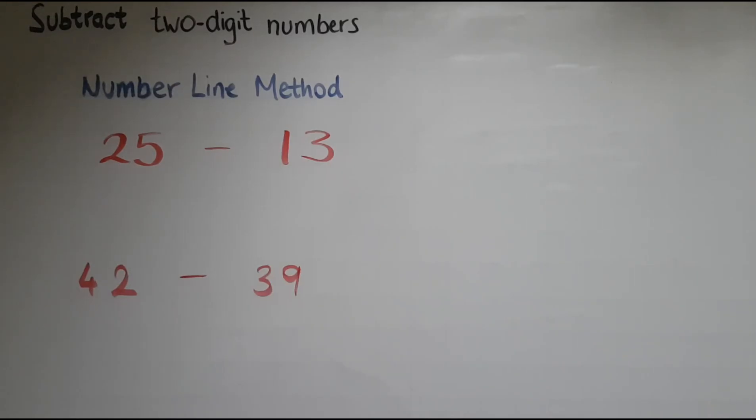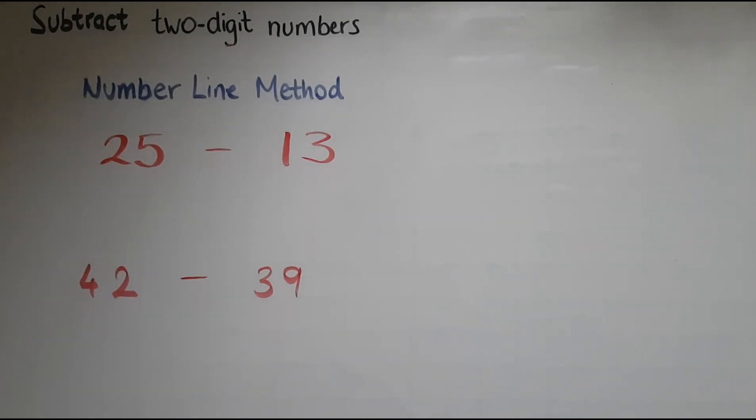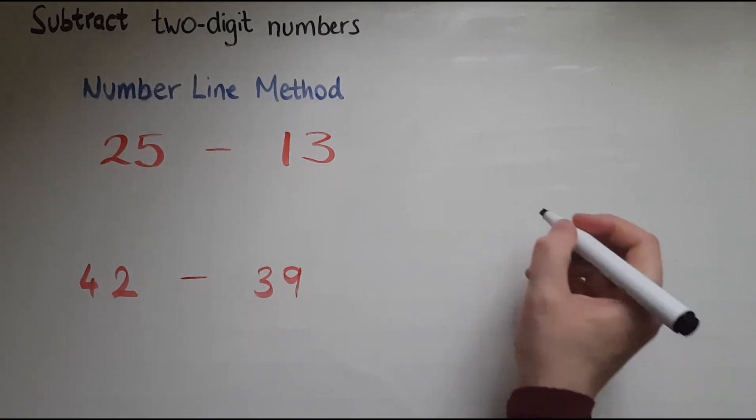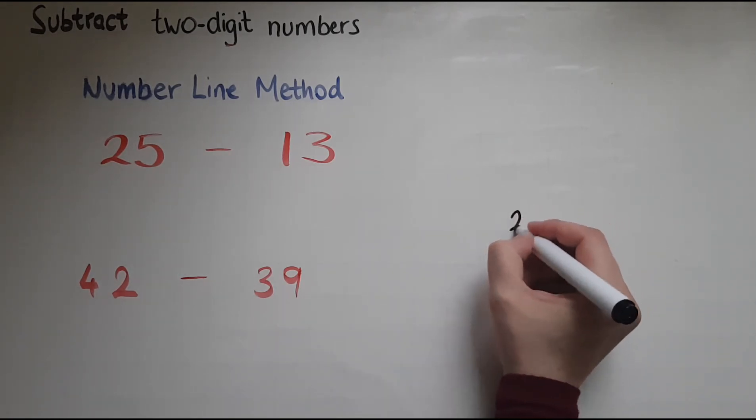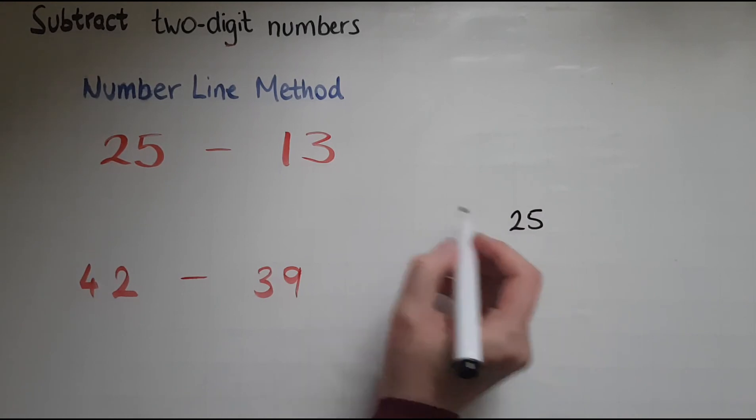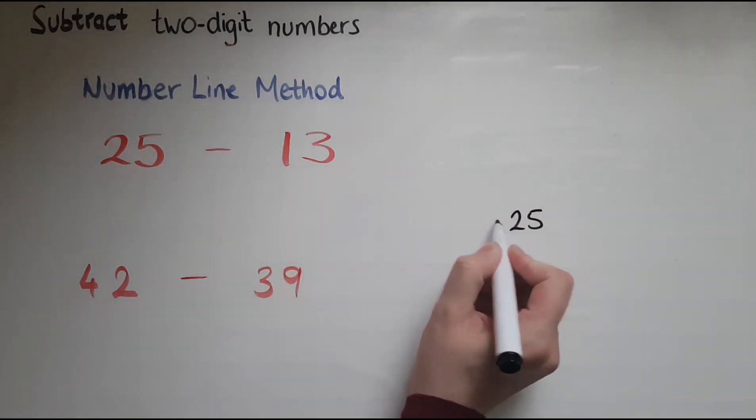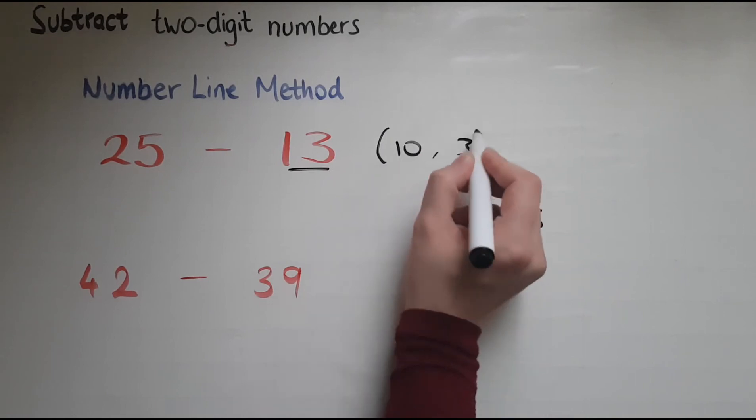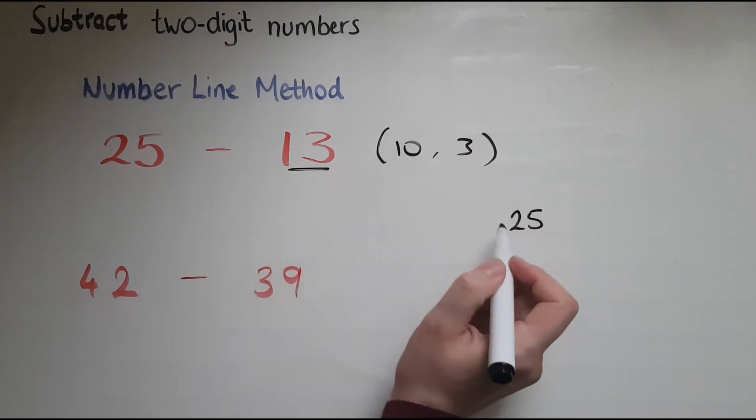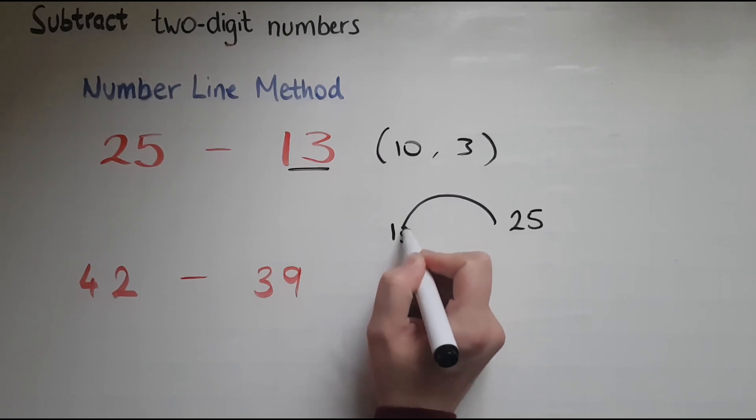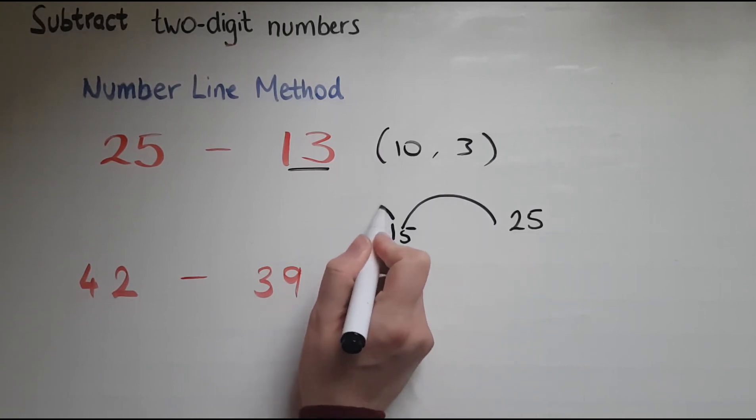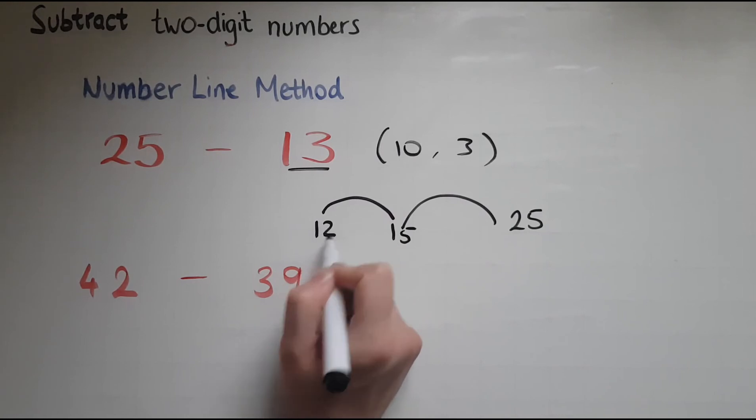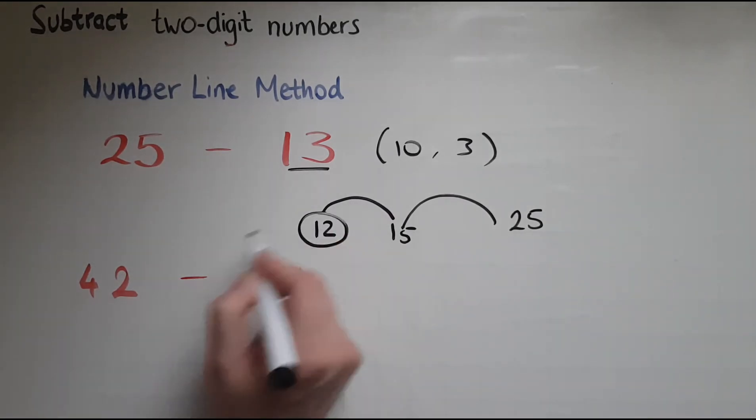In this video we'll learn to subtract two-digit numbers using the number line method. So we've got 25 take away 13. I'll start off with 25 and I will take away 10 first, because 13 is made of 10 and 3. So I'll take away 10 to go to 15. And then take away 3 to go to 12. So my answer is 12.